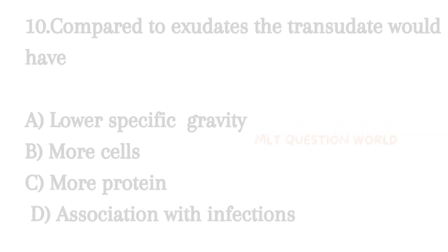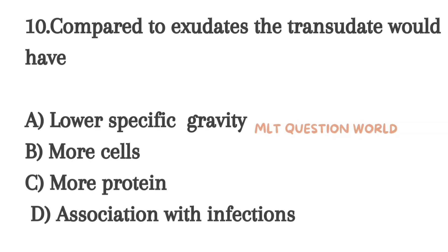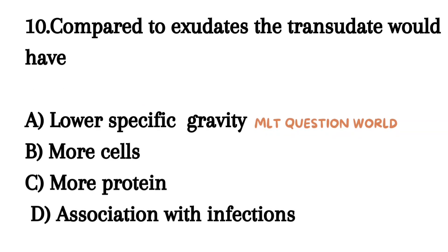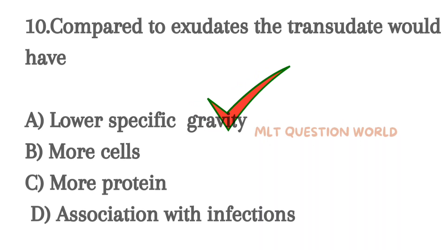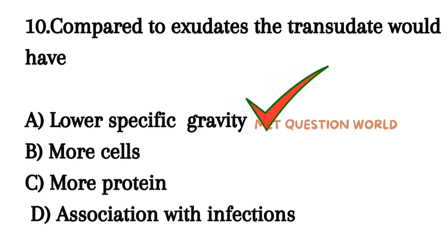Question 10. Compared to exudates, the transudate would have: Option A. Low specific gravity, Option B. More cells, Option C. More protein, Option D. Association with infection. The right answer is Option A — lower specific gravity. Transudate has lower specific gravity compared to exudate.